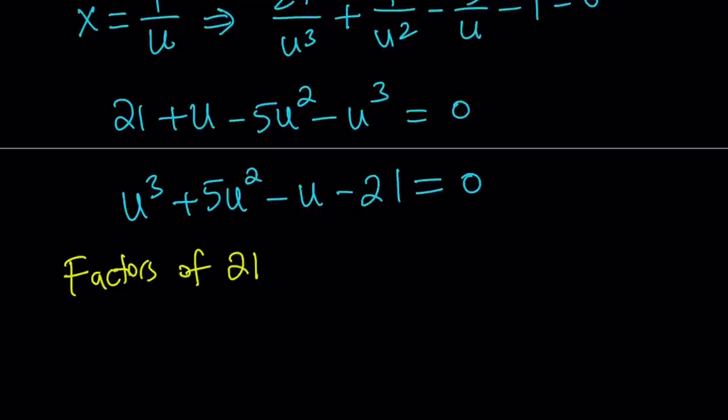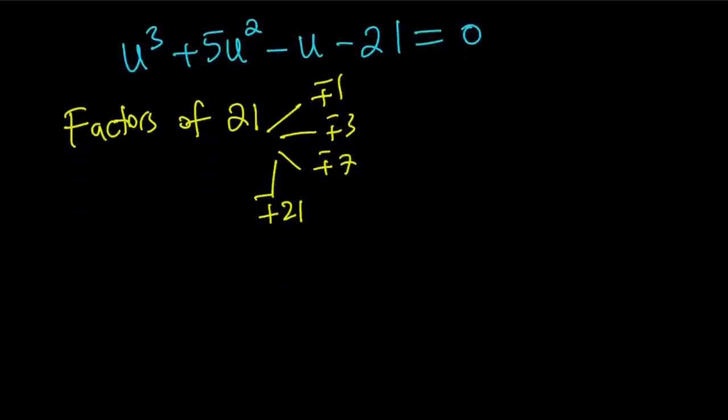Factors of 21. Well, we have plus minus 1, plus minus 3, plus minus 7, and plus minus 21. Since 21 is 3 times 7, the product of two prime numbers, then it should have four positive and four negative factors. So you get eight values of u. Among these, one of them hopefully is going to work. And actually it does. So to save you all the trouble, I did the work for you. And u equals negative 3 works.